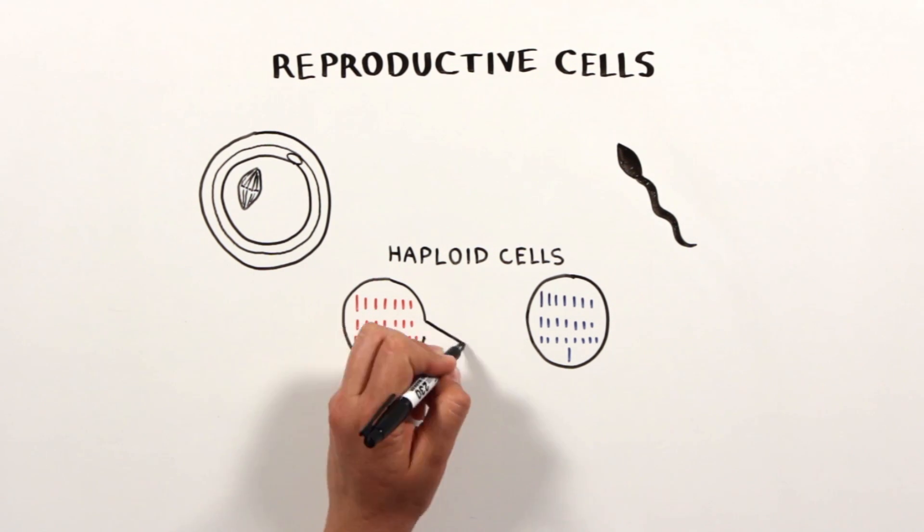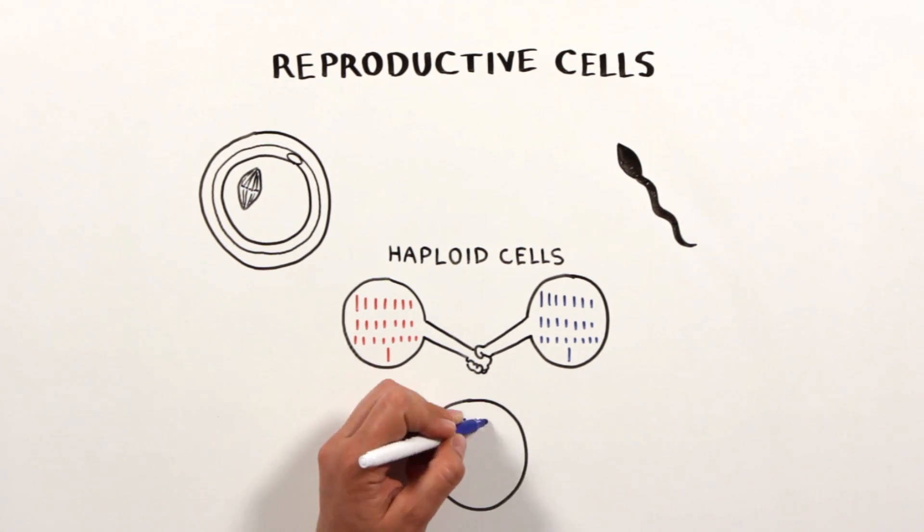However, egg and sperm cannot divide to make more of their own, and during fertilization of the egg by the sperm, they generate a new diploid cell.